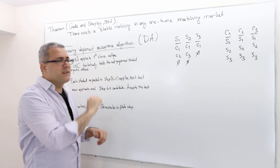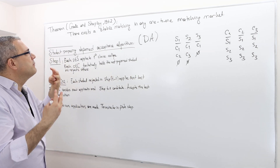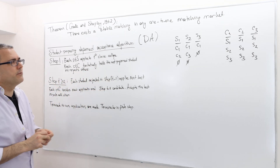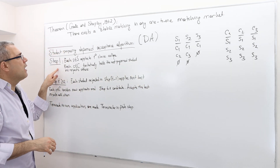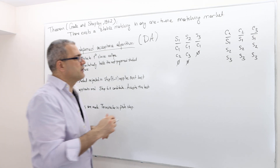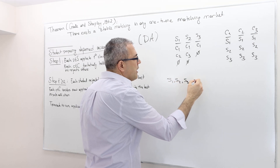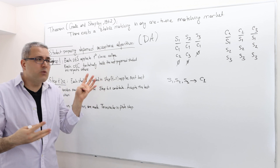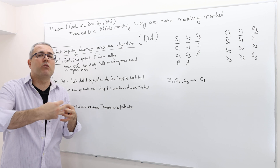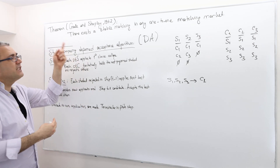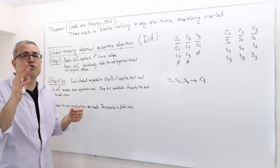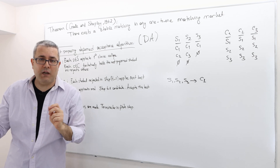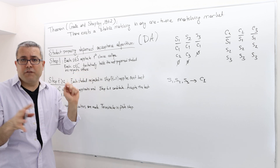Let's work on an example. If you change the preferences, obviously the stable matching will change as well. Let's find the stable matching according to the student-proposing deferred acceptance algorithm for this particular example. This is not a game — this is an algorithm to find a stable matching. Gale-Shapley says if you follow this algorithm, the outcome you get is going to be stable. There may be other algorithms that give you a stable matching, but this is one of them, and it will always produce a stable matching.